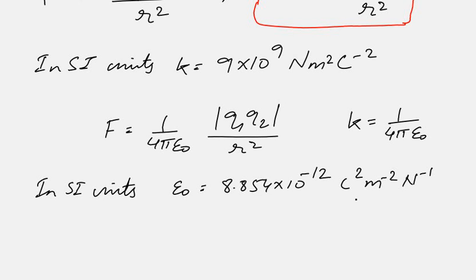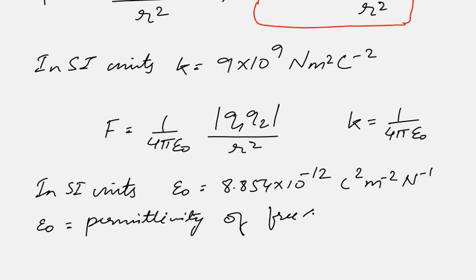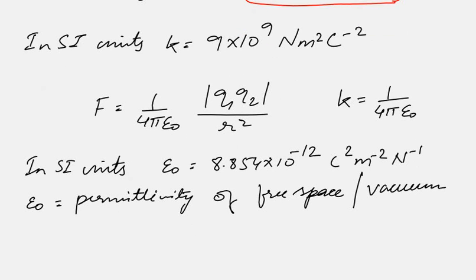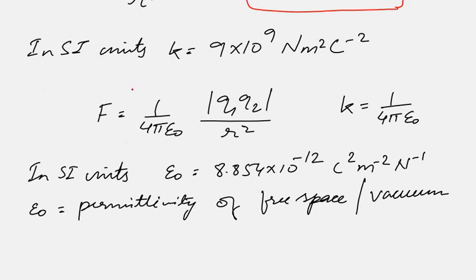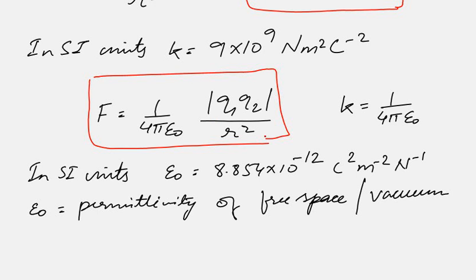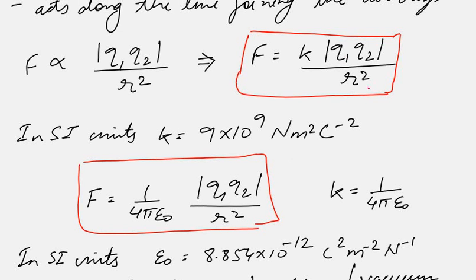ε₀ is given the name permittivity of free space — or simply vacuum. In vacuum its value is 8.854 × 10⁻¹². You don't have to remember these values as they will be provided in exams. So we have two forms of Coulomb's Law: F = k|q1||q2|/r², and the form where k is replaced with 1/4πε₀.